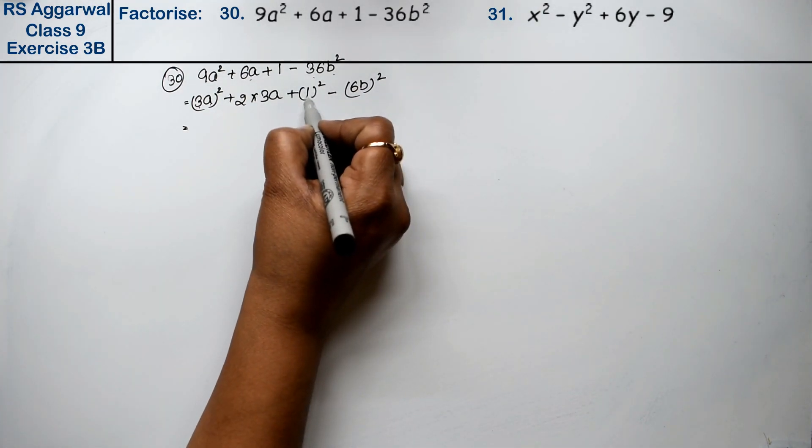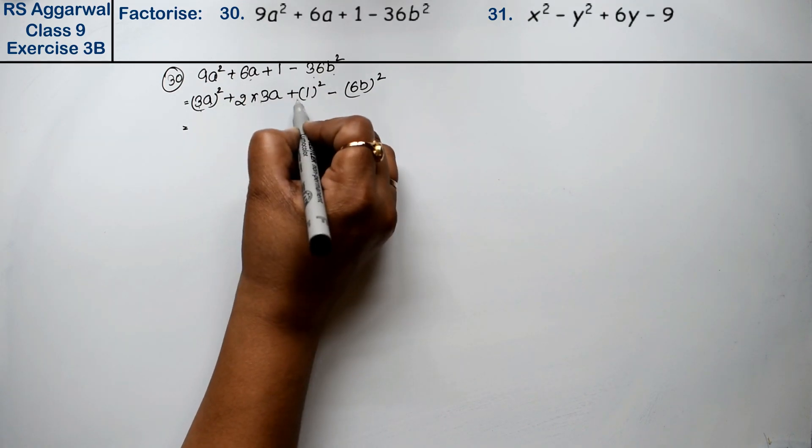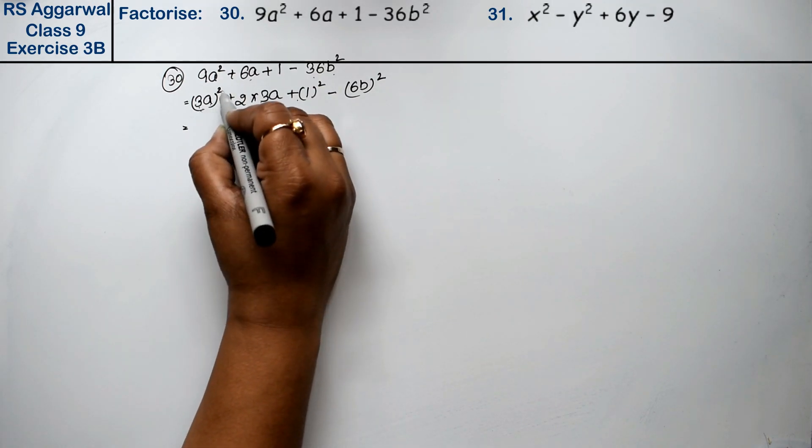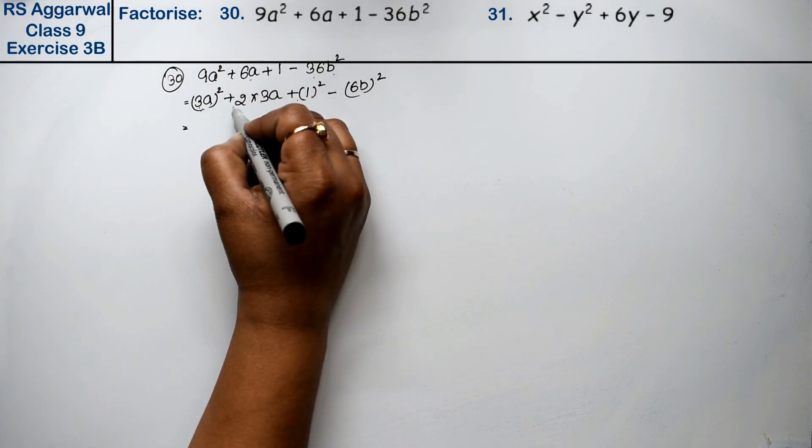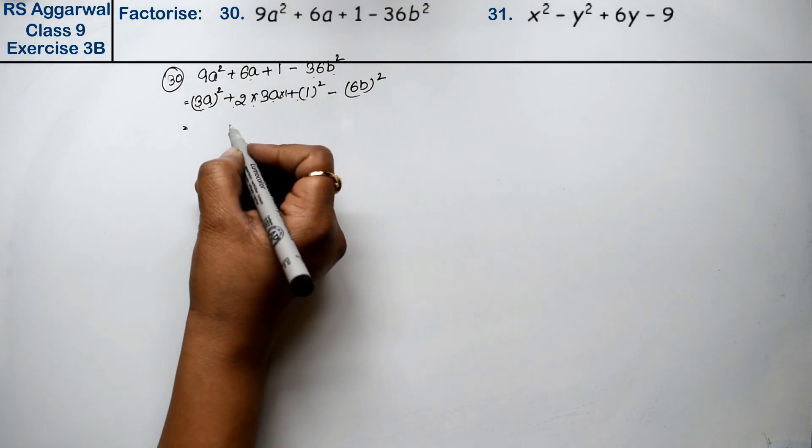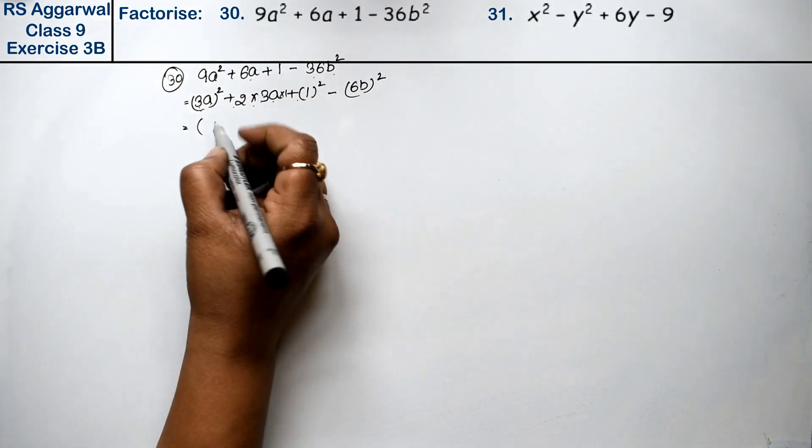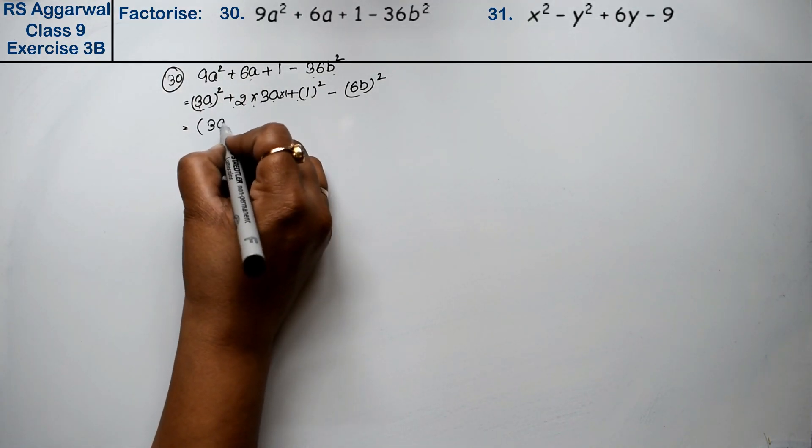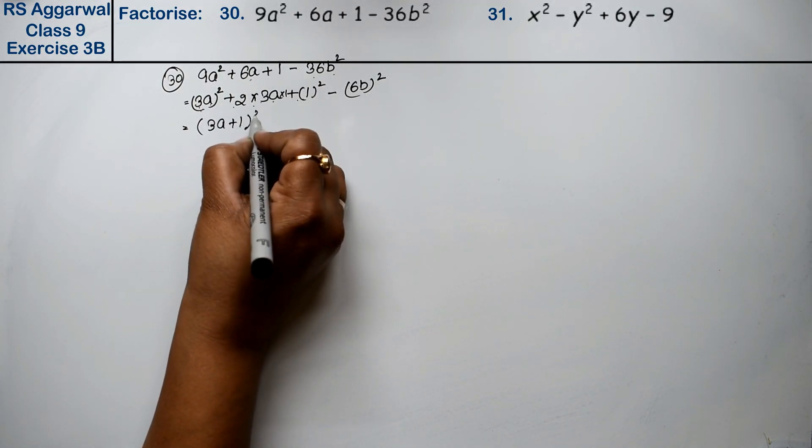If we take this whole thing in one bracket, it becomes a² + b² + 2ab, because when we multiply by 1, we get the same answer. So this is the formula. What is a? 3a. What is b? 1. So it becomes (3a + 1)² - (6b)².